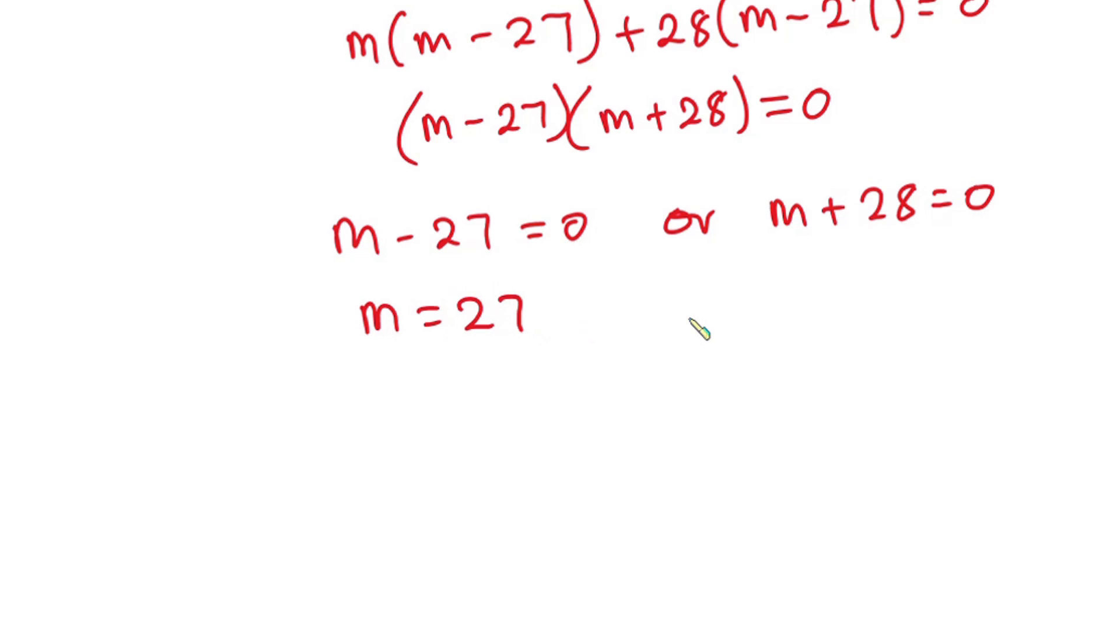So from this equation we have m to be 27, then from this equation we have m to be negative 28. But don't forget that we let m equals 3 to the power x.